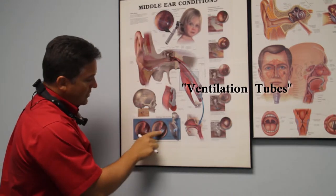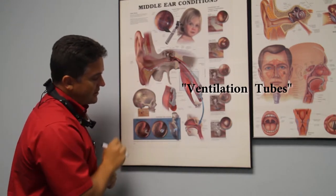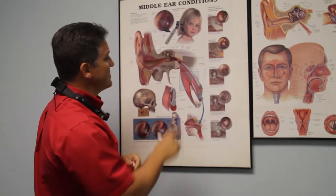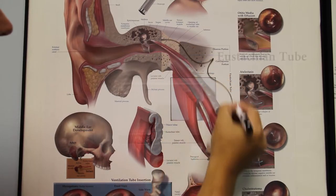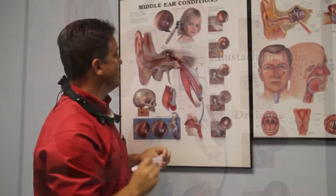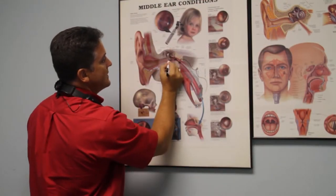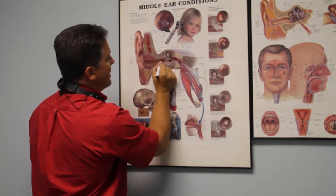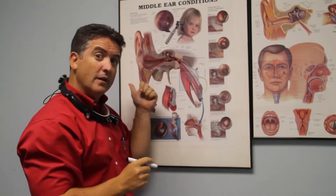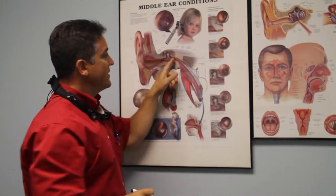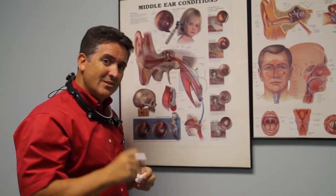Here's a picture of an ear tube as we're looking straight at it, and here it is on profile. What an ear tube allows us to do is bypass the eustachian tube. So instead of fluid draining down and out of the eustachian tube and into the back of the nose, if we put a tube into the eardrum, we've allowed a pathway by which the fluid can drain out of the ear.